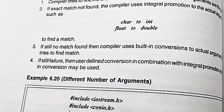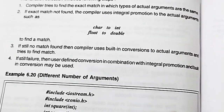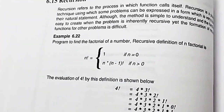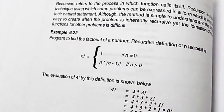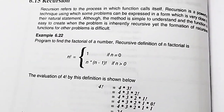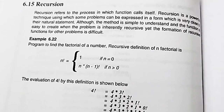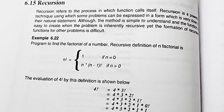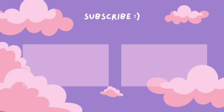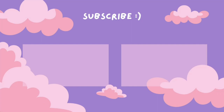Recursion is the process in which a function calls itself again and again. We have covered it in detail in C programming, so you can check that video. That is all for functions. In the next lecture, we will start with structures and unions. Till then, keep learning!